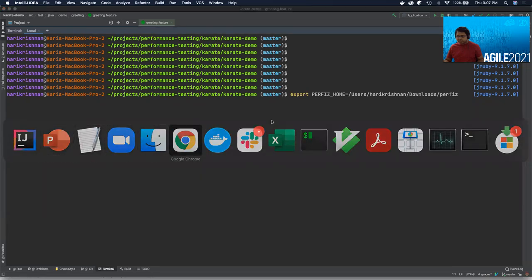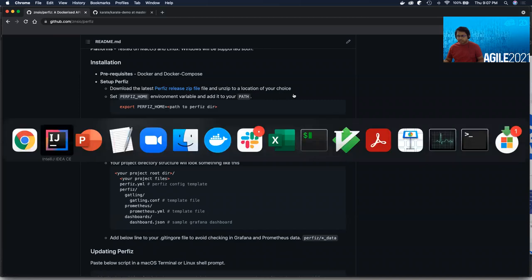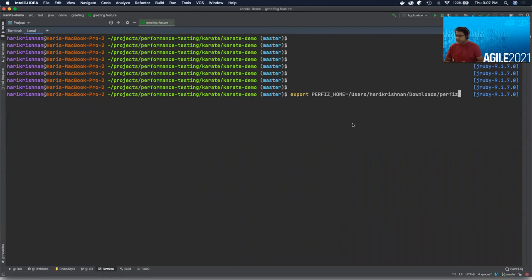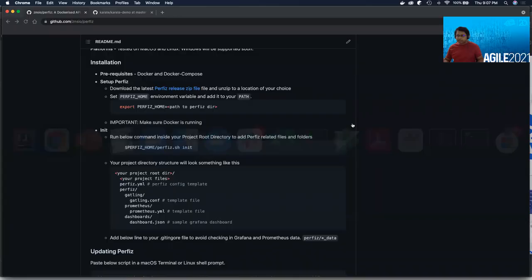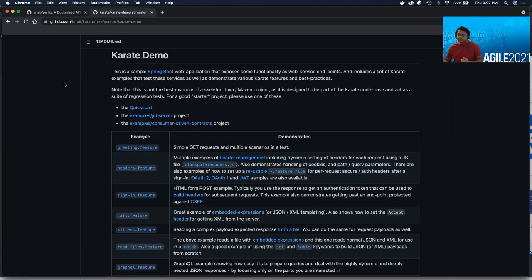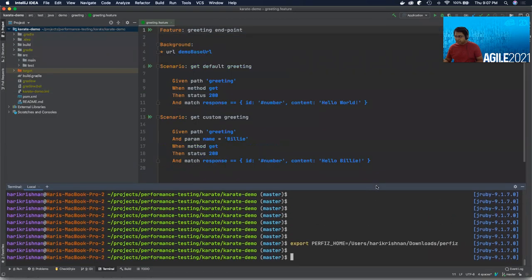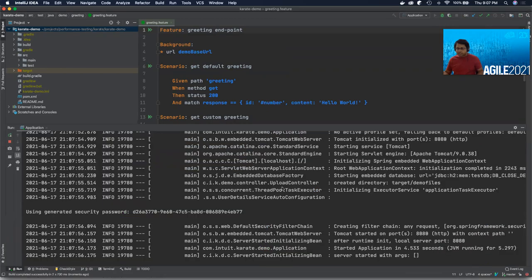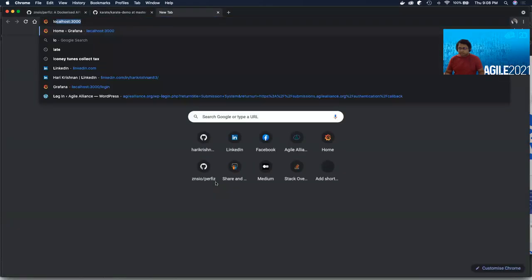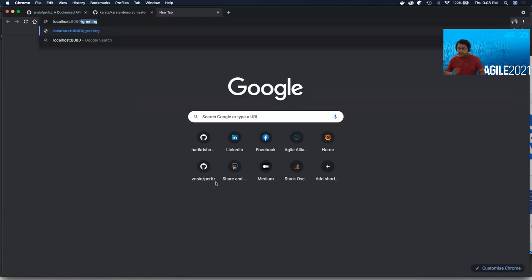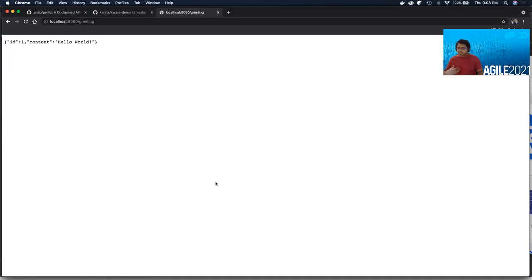So installing perfis is as easy as downloading the zip file and extracting it to a location of your choice. I've already done that. Now I'm going to set the environment variable perfis home to point to the location where I've extracted it. I've done that and that's pretty much all the setup I'll need. At this point, I need a demo project which already has some Karate API tests, which I can convert as performance tests. So for this purpose, I'm going to use the Karate demo project, which sits inside the Karate GitHub. So I've already got the app cloned onto my local machine. I'm going to boot up the application now and it has started. Let's verify if it's running localhost 8080 and greeting. Hello, the app is running.